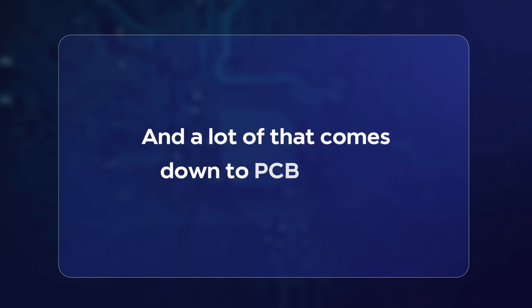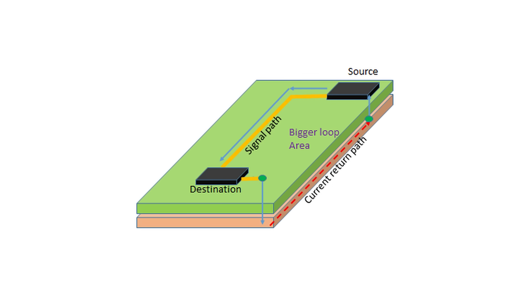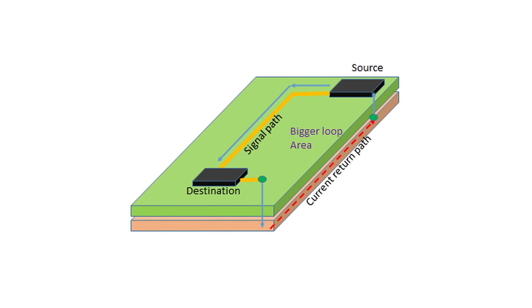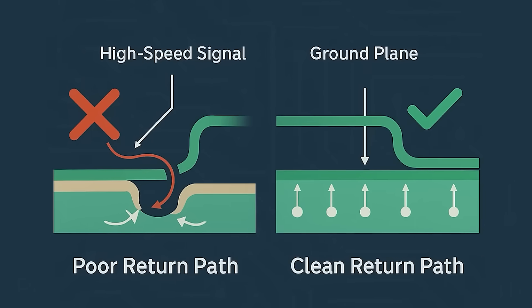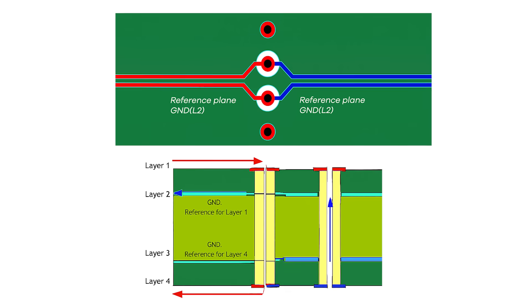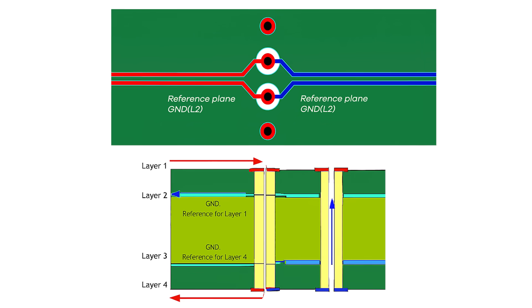A lot of that comes down to the PCB layout. For example, if you run long signal traces without a solid return path underneath the trace — like over a split ground plane — those traces effectively become like antennas. High-speed signals need a continuous ground reference to prevent radiating noise, and without that they can leak emissions and fail radiated emissions tests.